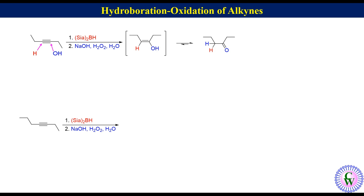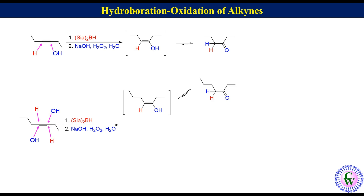Hydroboration oxidation of hept-3-yne: In this example the alkyne is unsymmetrical. Attack of H on the left alkyne carbon and OH on the right gives hept-3-en-3-ol, which tautomerizes to the more stable keto form, heptan-3-one. While attack of H on the right alkyne carbon and OH on the left gives hept-3-en-4-ol, which tautomerizes to the more stable heptan-4-one. Since the size of the ethyl and propyl groups is not much different, both ketones will be formed with similar percentage.